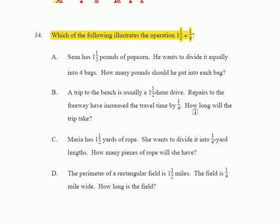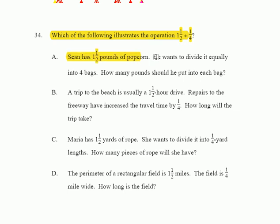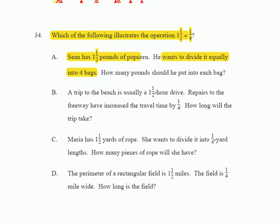Option A: Sean has one and one-half pounds of popcorn and wants to divide it equally into four bags. How much should be put into each bag? That would mean dividing one and one-half by four, so that does not fit the model. Option A is out.